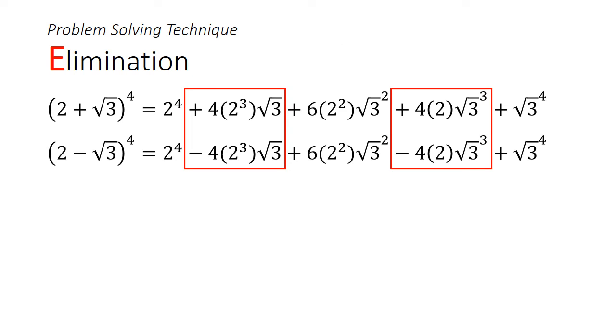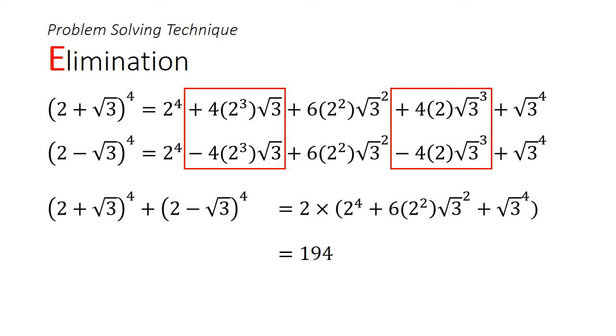This is helpful because if we add the two rows together, the irrational terms in the red boxes would cancel out. We can further evaluate the right-hand side until we get 194. If we observe the left-hand side, you would notice that (2-√3) is less than 1. And if you raise it to the power of 4, it would still be less than 1.